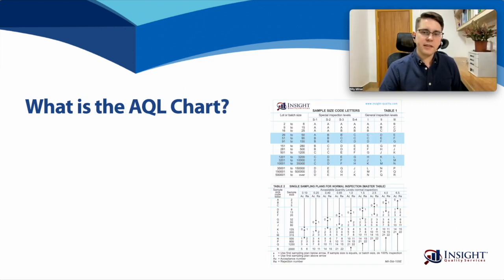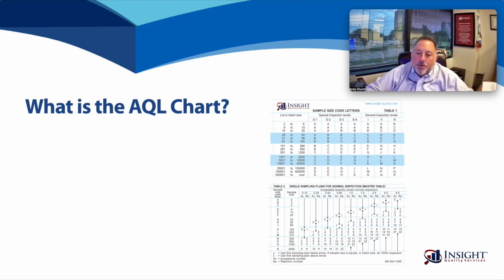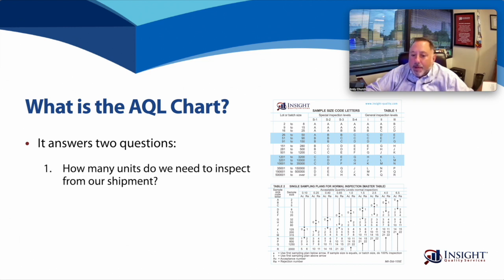To conduct these inspections, they use what we call the AQL chart. This is the tool the inspector uses to determine the sample size. It was originally developed by the U.S. military for inspecting equipment, and it allows the inspector to answer two questions: how many units do we need to inspect from our shipment, and how many defective products are allowable before the inspection fails? It consists of two tables.